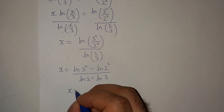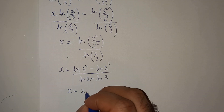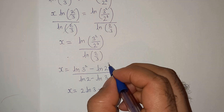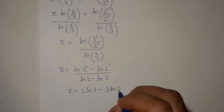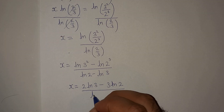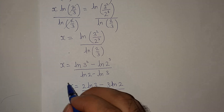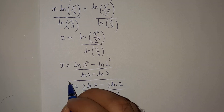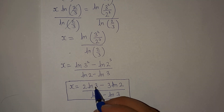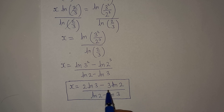Let's simplify: log(3 squared) can be written as 2 log 3, and log(2 cubed) as 3 log 2. So x equals (2 log 3 minus 3 log 2) divided by (log 2 minus log 3). This is our final answer. You can further simplify by substituting the numerical values of log 2 and log 3.